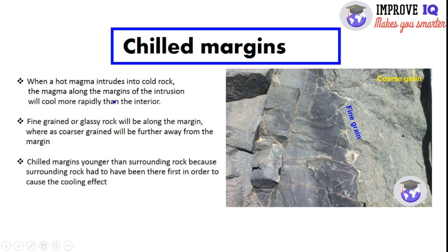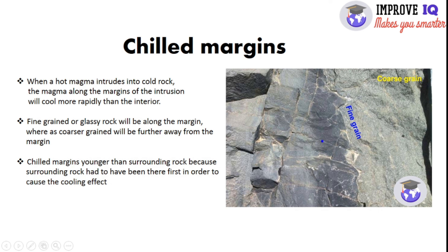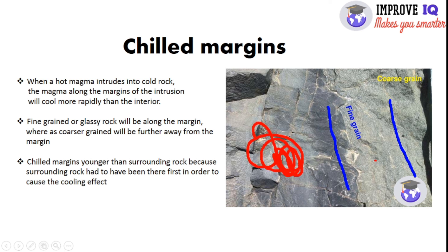The last principle is chilled margins. When a hot magma intrudes into cold rock, the magma along the margins of the intrusion will cool more rapidly than the interior. Fine-grained or glassy rock will be along the margin, whereas coarser-grained rock will be further away. Chilled margins are younger than the surrounding rock because the surrounding rock had to have been there first in order to cause the cooling effect. The fine-grained region is due to rapid cooling, while the coarser-grained region took more time to cool.